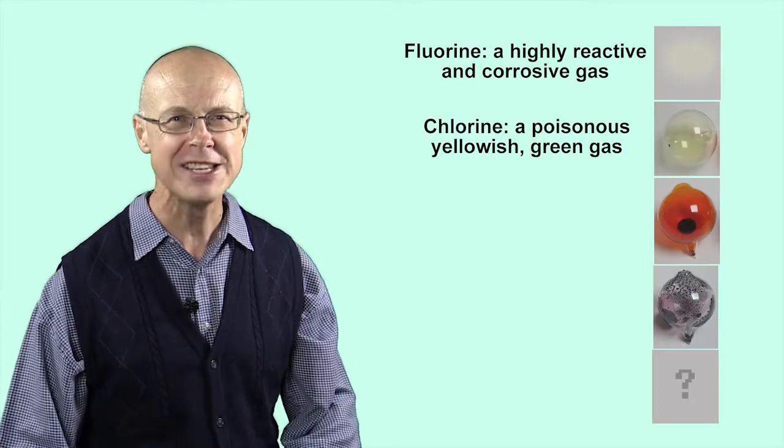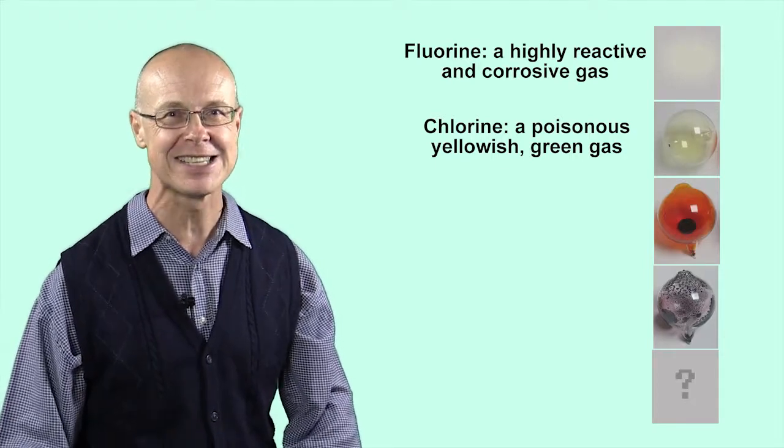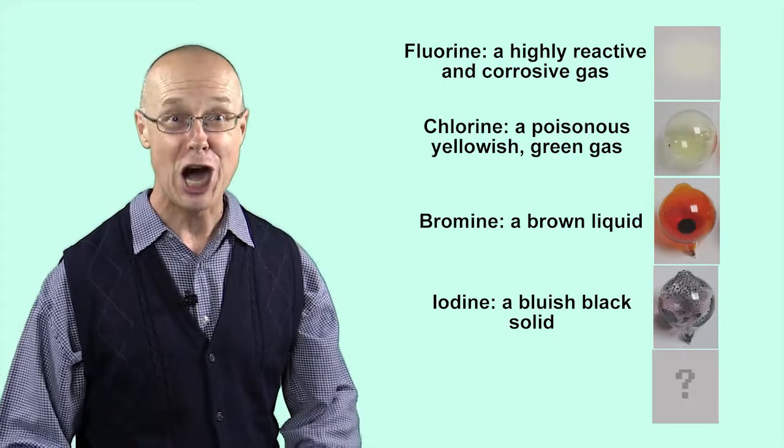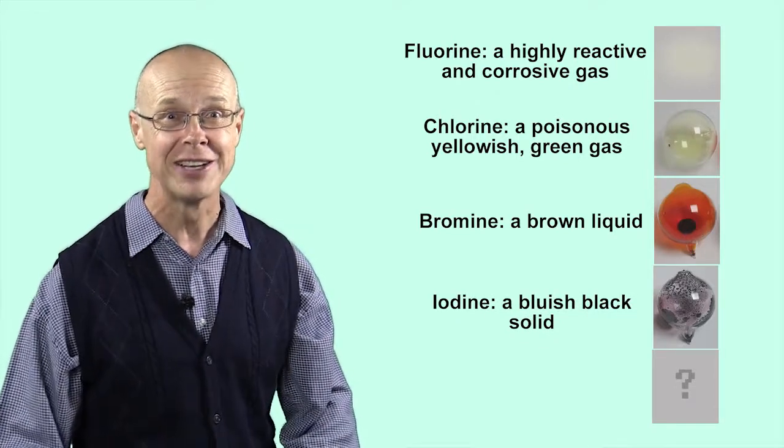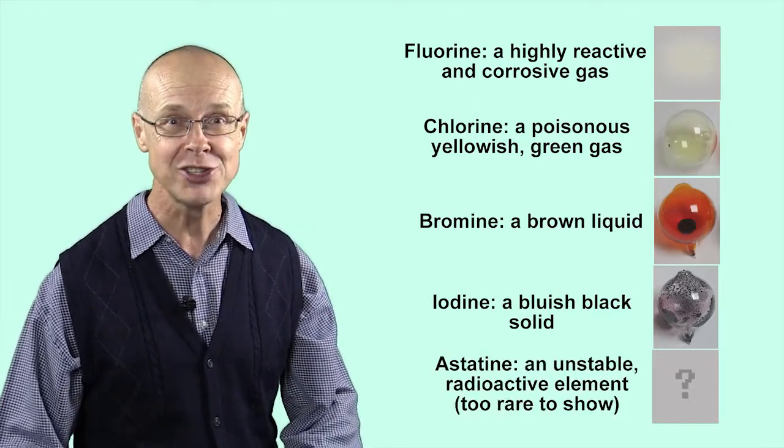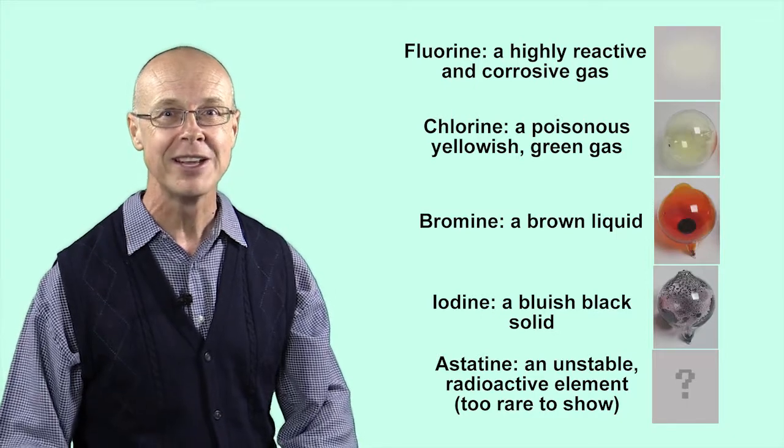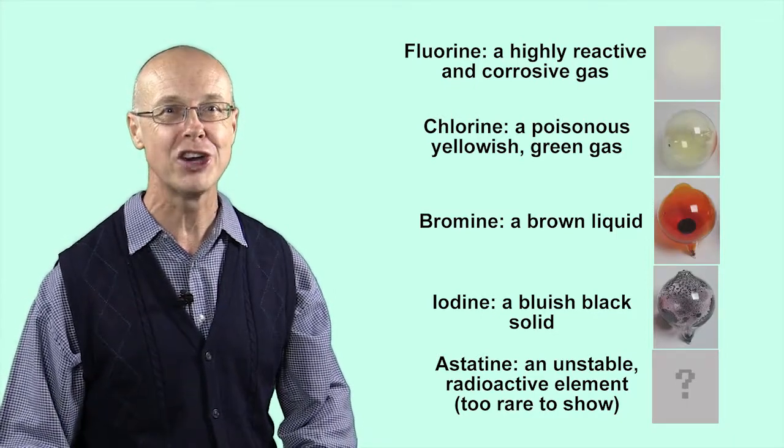Chlorine is a poisonous yellowish-green gas. Bromine is a brown liquid, iodine a bluish-black solid, and astatine an unstable radioactive element that is the rarest naturally occurring element on Earth.